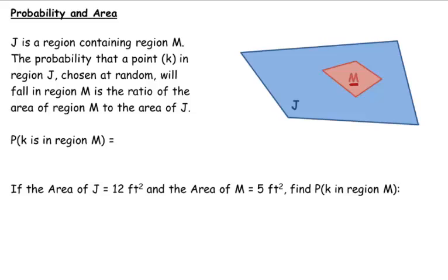M. There's my smaller region M in the middle. So the probability that any point K is in this region that's gonna be in region J, some point K that I choose at random, will fall in region M. Is the ratio of the area of M to the area of J.